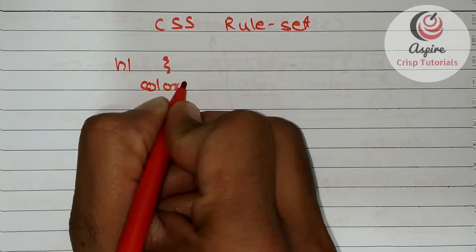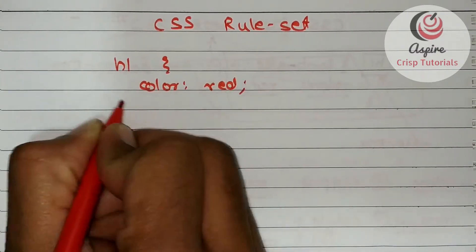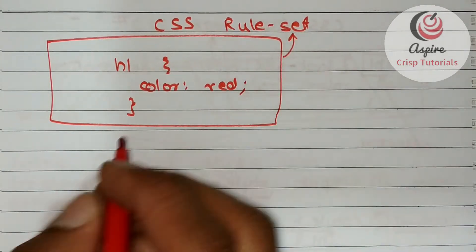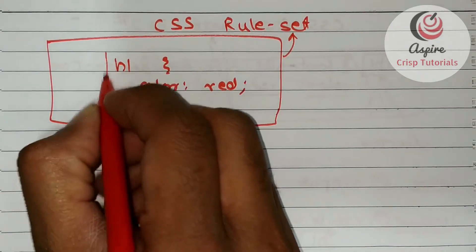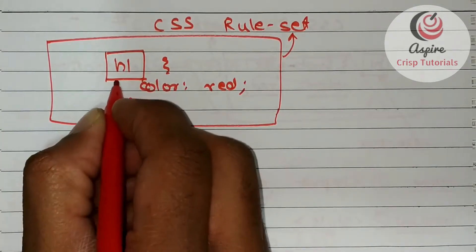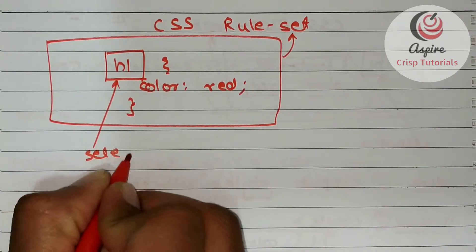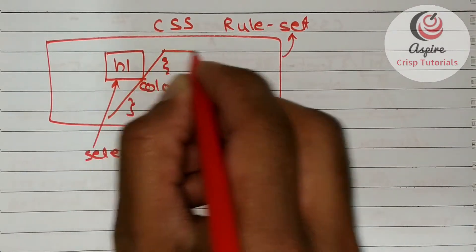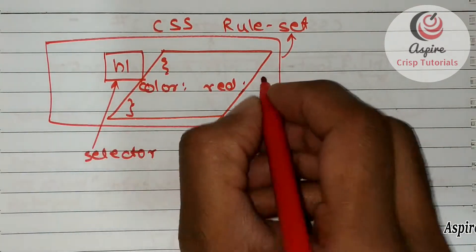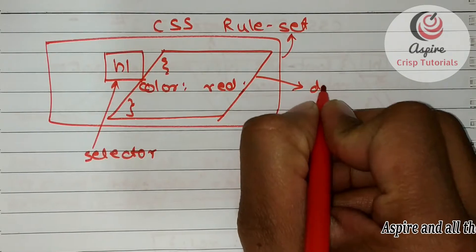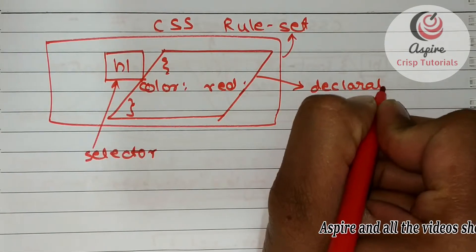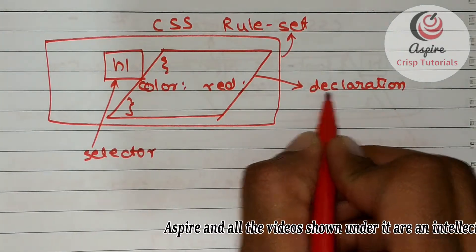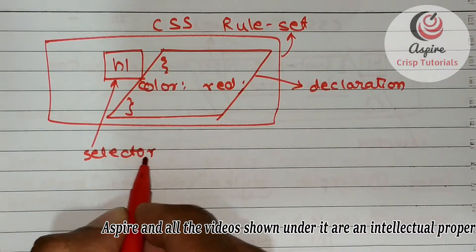...should be in red color, this is called a CSS ruleset. It is made up of two parts: selector, which identifies the DOM element to be styled, and declaration, which is a JSON specifying or declaring how that DOM element should be styled.